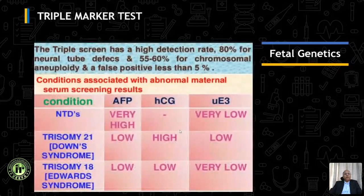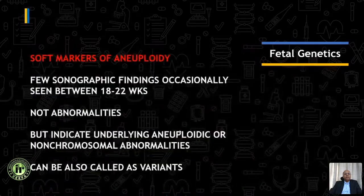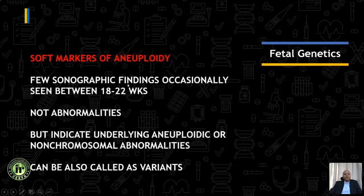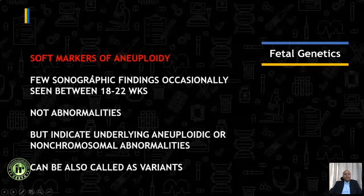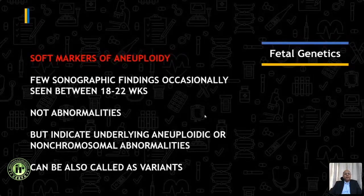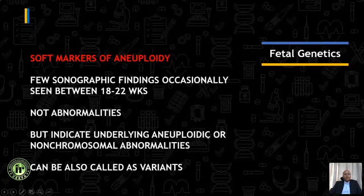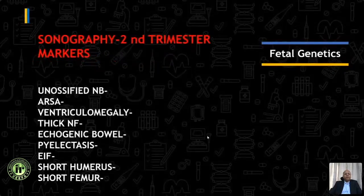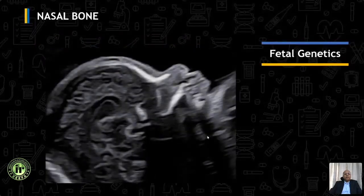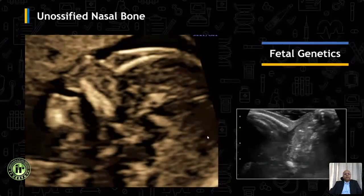The maternal age-related risk is converted to a first trimester risk, and then we move on to the second trimester, where we have the chance to do a triple or quadruple marker test along with ultrasound called a genetic sonogram or TIFA scan. When we do our TIFA scan or genetic sonogram, we have certain findings called soft markers of fetal aneuploidy, usually seen between 18 and 22 weeks. These are not abnormalities but indicate an underlying aneuploidy or a non-chromosomal abnormality.